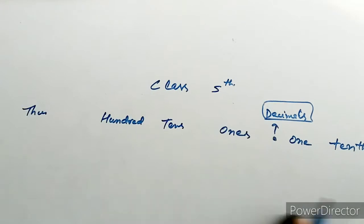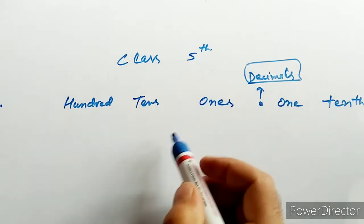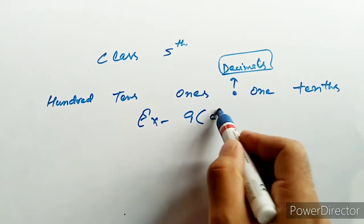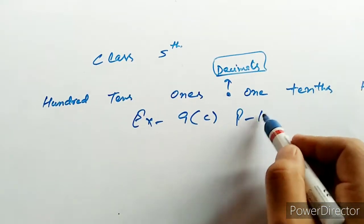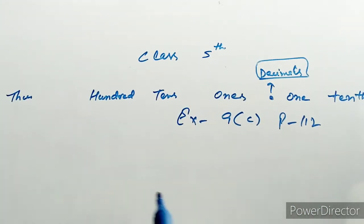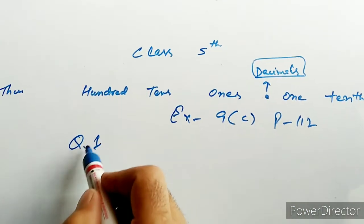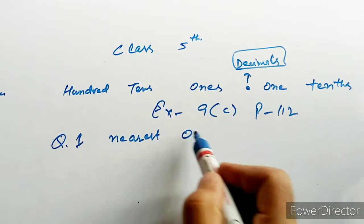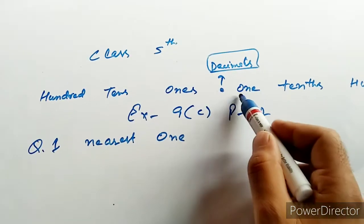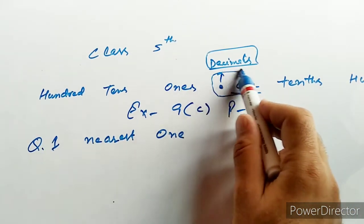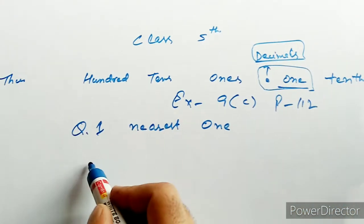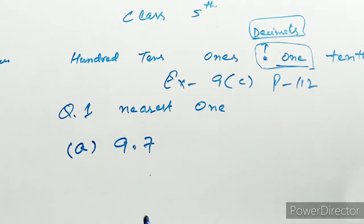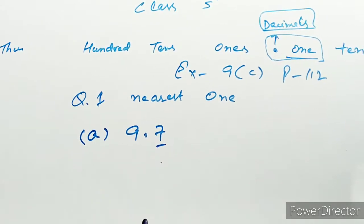तो यहाँ पे देखो, मैं सीधा आपकी exercise पे चलता हूं और exercise रहेगी यह वाली 9C। और अगर आप book का page number देखेंगे तो यह होगा 112। इसमें लिखा है question number one में कि आपको round off करना है nearest one को। Nearest one को करने का मतलब है कि point के बाद जो पहला digit आएगा, उसको आपने round off करना है। A part में यह है आपके पास 9.7।